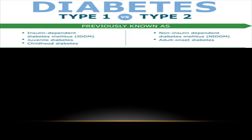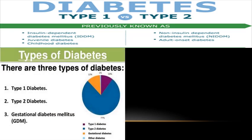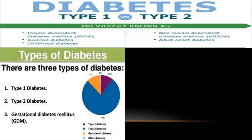Type 1 is also called insulin-dependent, juvenile, or childhood diabetes. Type 2 is referred to as non-insulin-dependent or adult-onset diabetes. Roughly, type 1 accounts for about 10% of cases, gestational diabetes about 12%, and the remainder are type 2 diabetes.